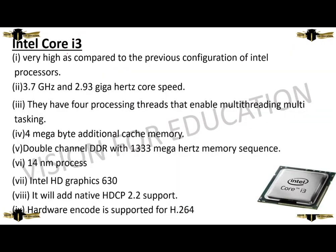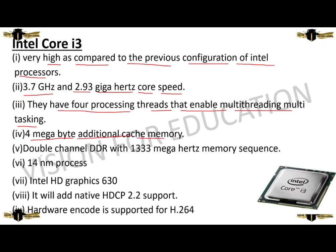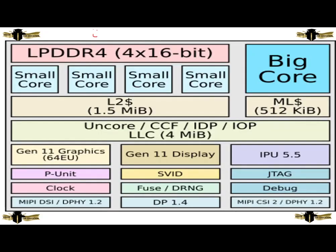Now we are going to discuss about Intel Core i3. It has a very high clock speed compared to previous Intel processors: 3.7 GHz and 2.93 GHz core speed. It has 4 processing threads enabling multi-threading and multi-tasking units, 4 MB additional cache memory, dual channel DDR with 1333 megahertz memory, 14 nm processor, Intel HD Graphics 630, native HDCP 2.2 support, and hardware encoder support for H.264.